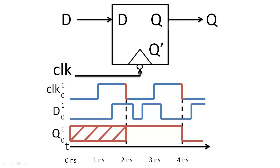When we have a negative edge triggered flip-flop, we add a complement circle to the diagram, and the state of the flip-flop will update only when the clock falls from 1 to 0.